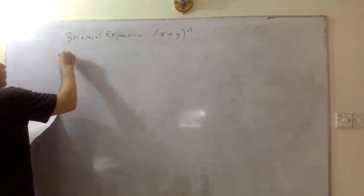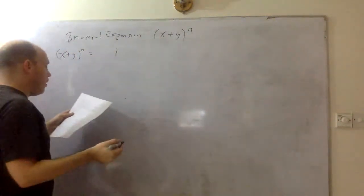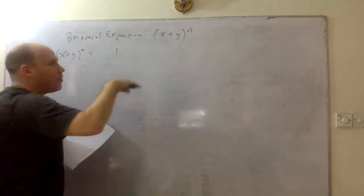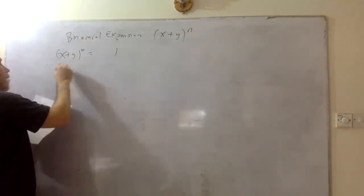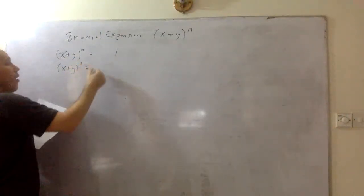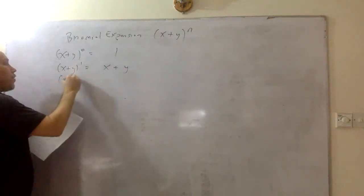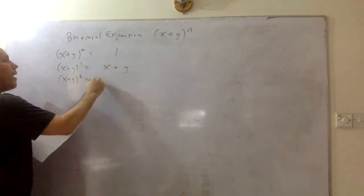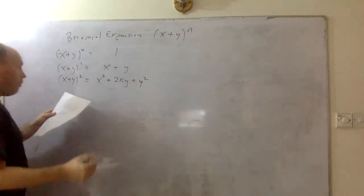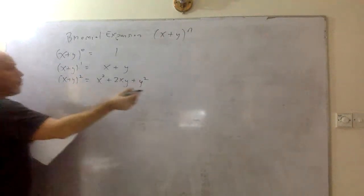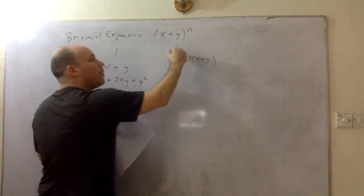So we have x plus y to the zero. Anything to the zero is one, assuming x and y are not zero. x plus y to the first power is x plus y. We know how to multiply x plus y squared — we get x squared plus 2xy plus y squared. That's x plus y times x plus y, maybe using the FOIL method.